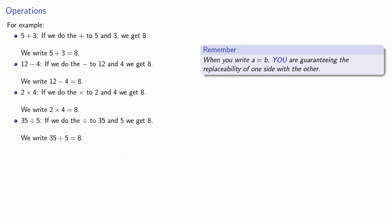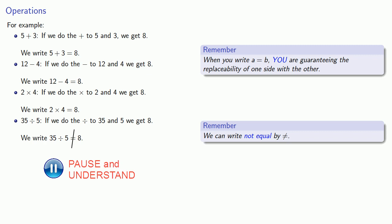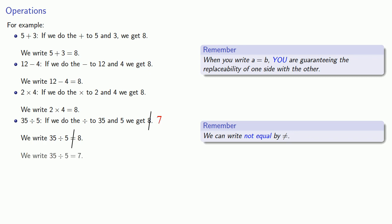Actually, we're not willing to guarantee that — so we write not equal by putting a slash through the equals sign. Upon further consideration, we might be willing to guarantee that 35 divided by 5 can be replaced with 7.